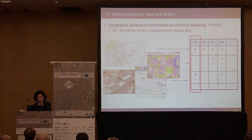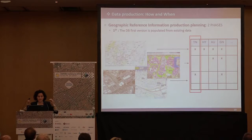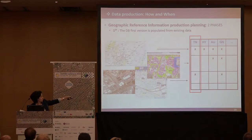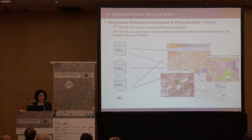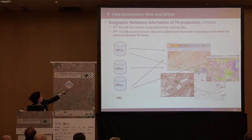The geographic reference information production planning has been defined to be carried out in two phases. The first one is to create the first version of the database with the integration of existing data — we have to detect and check the best data in every product to create our transport data. The second phase is, once we have this kind of information, to improve the data in accuracy and update it. Because when we achieve that, all the national products will be fed from this database. We are currently involved in the first phase, but we are also researching the second one.